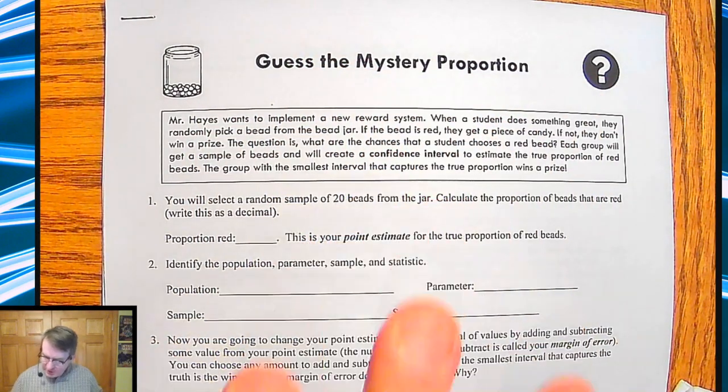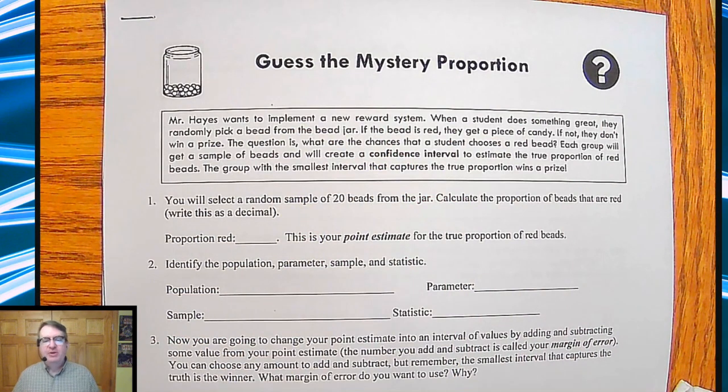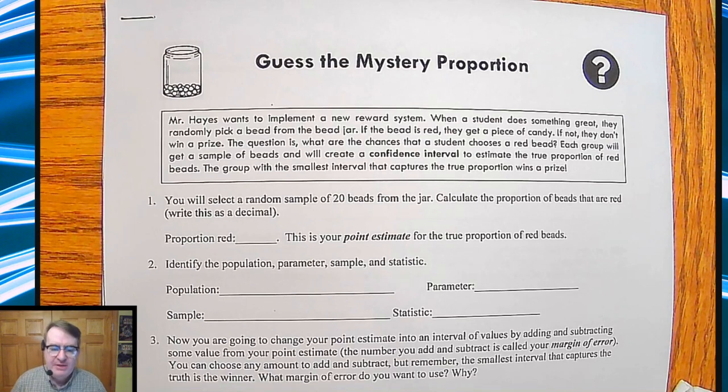Guess the mystery proportion. I want to implement a new reward system. When a student does something great, I'll randomly pick a bead out of a jar, and if it's red, they get a piece of candy, and if it's not red, then they don't win a prize. Certainly sounds like a good way to do things. The question is, what are the chances that a student gets a red bead? Each group will get a sample set of beads, create a confidence interval. What's a confidence interval? Don't worry, we'll walk you through it.